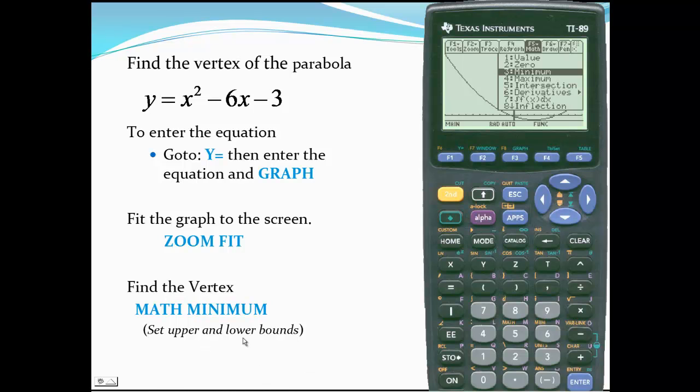We'll set our upper and lower bounds. I'll press enter. It asks for a lower bound. I simply want to set my bullseye to the left of my vertex. I'm already to the left, so I'll press enter. For upper bound, I want to set my bullseye to the right of the vertex. I'll press enter.